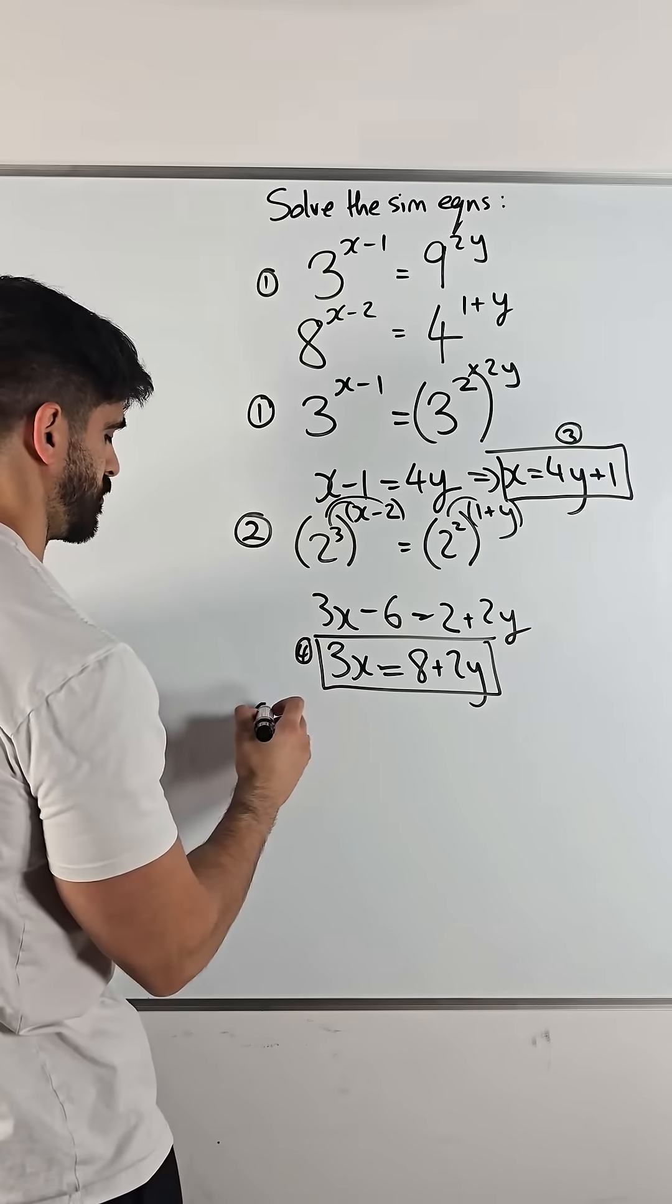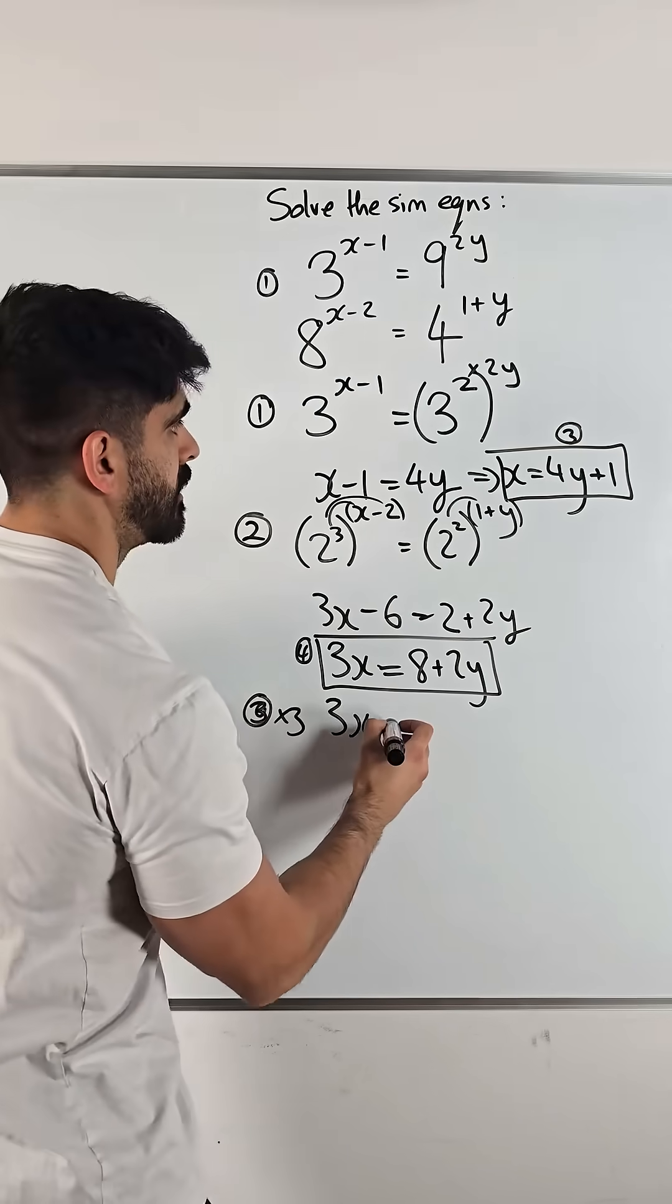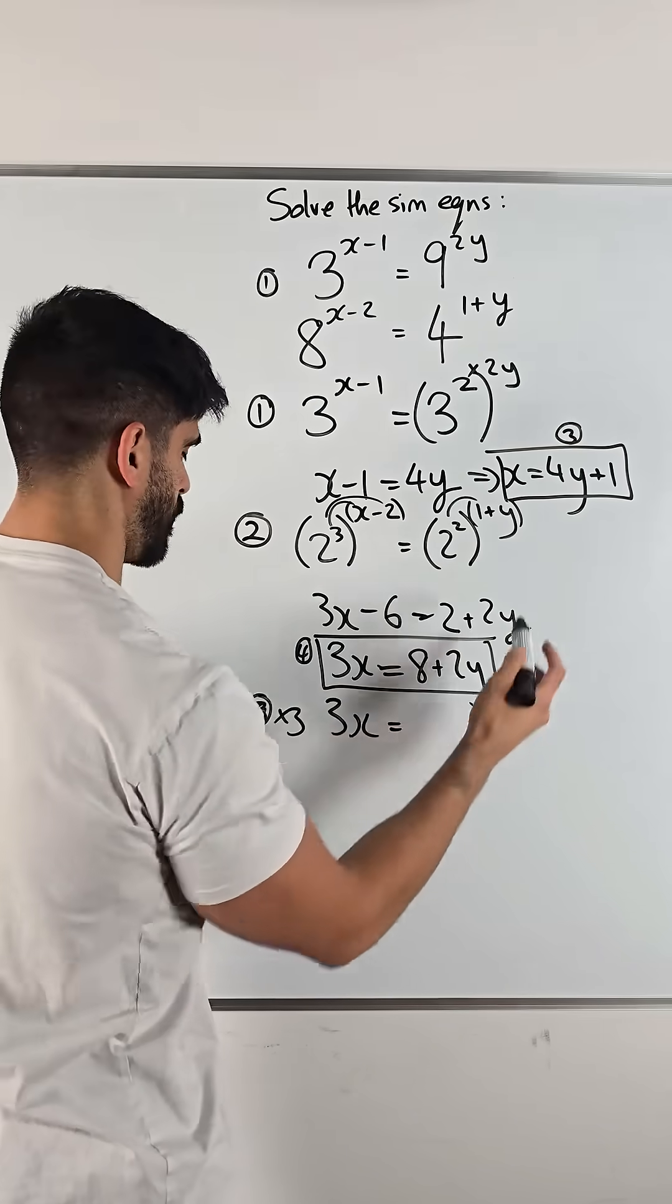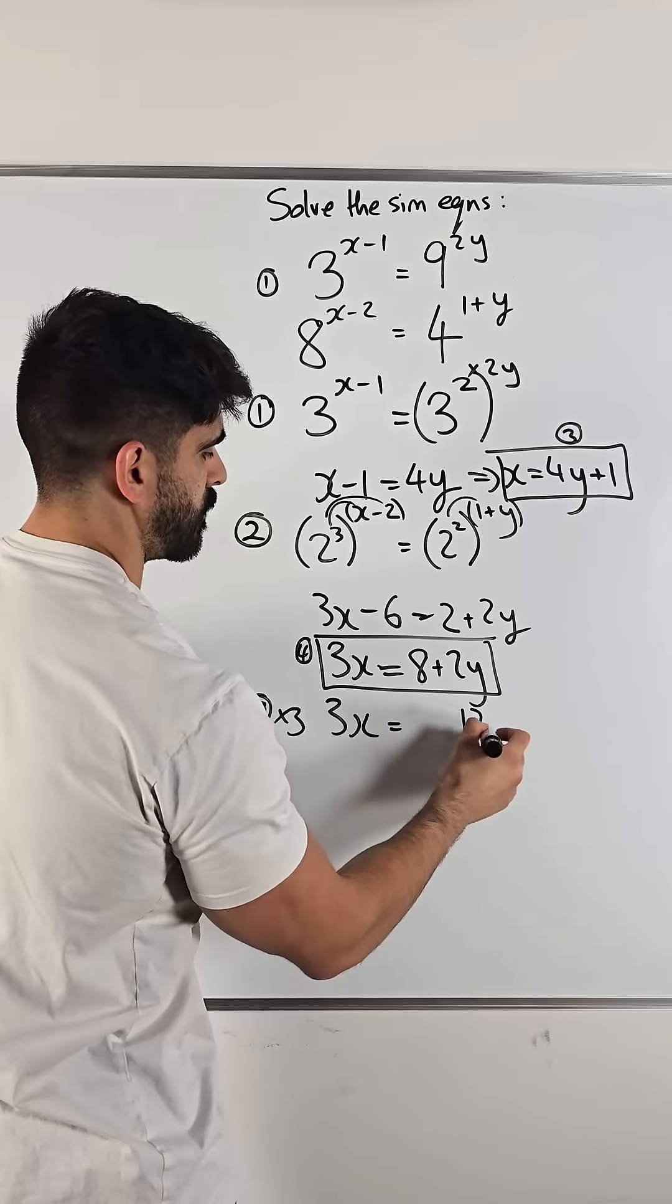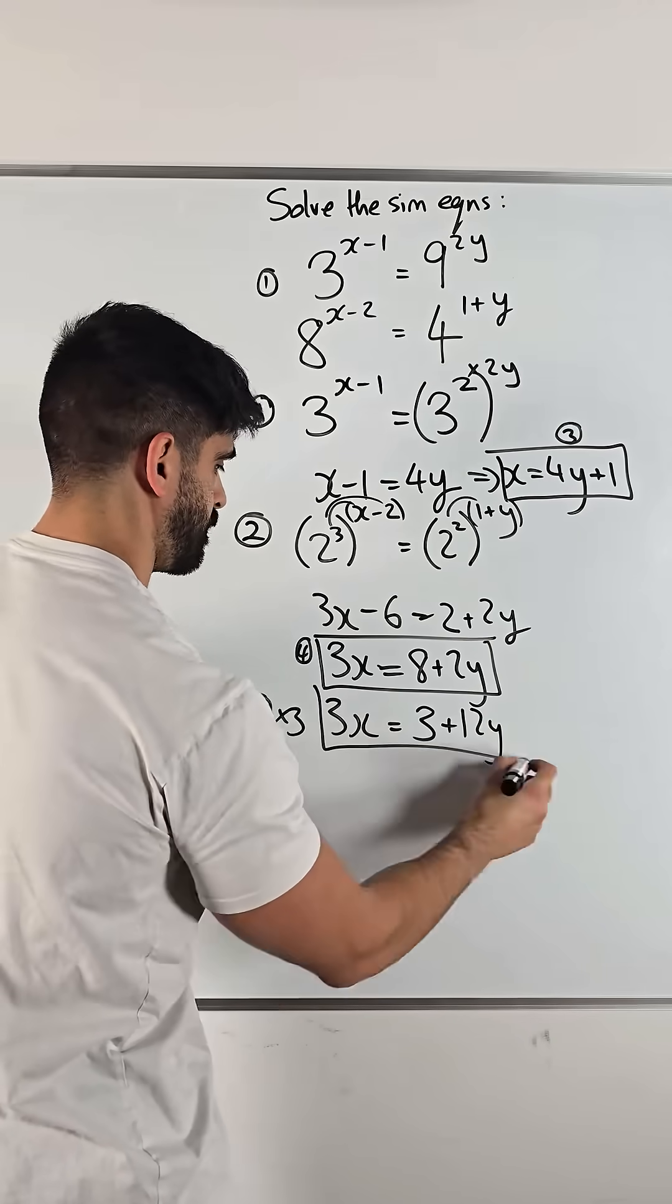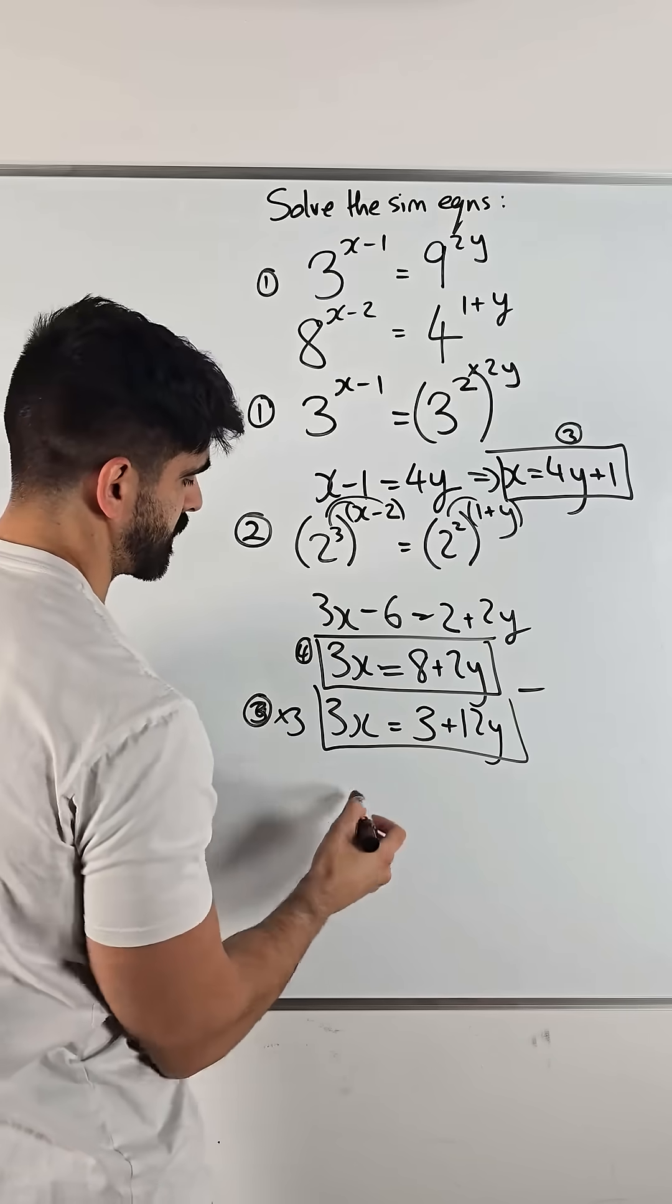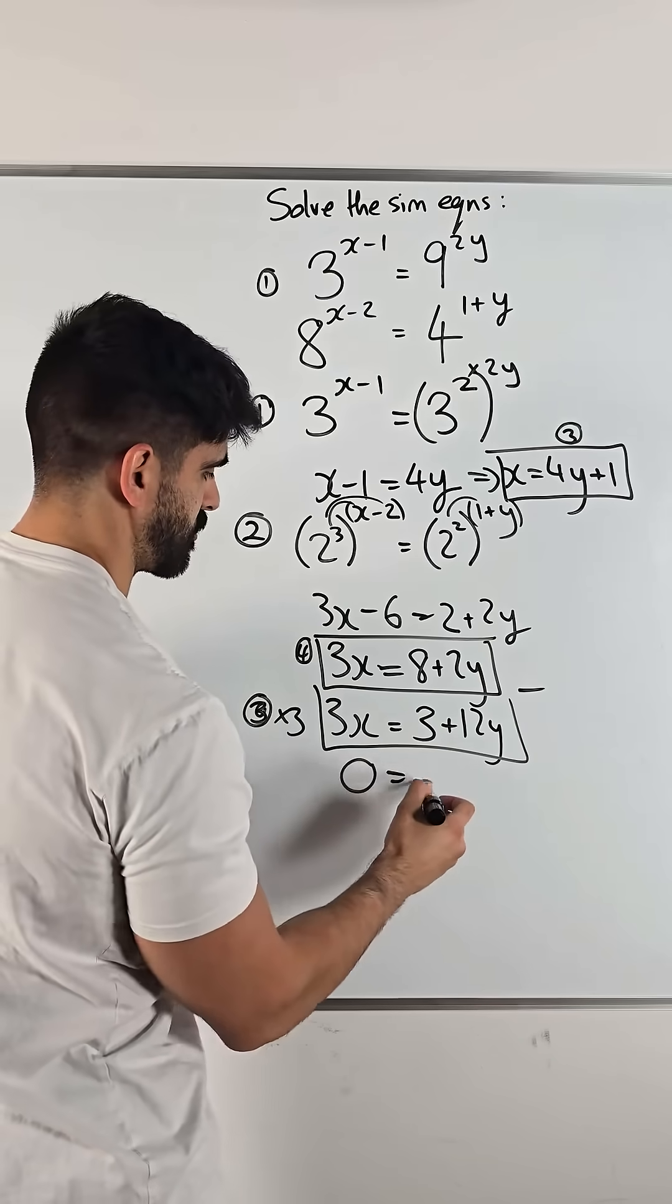So, equation 3 times 3 is what? 3x equals 4 times 3 is 12y plus 1 times 3 is 3. Then we minus them because they're the same. 3x minus 3x is 0. 8 minus 3 is 5.